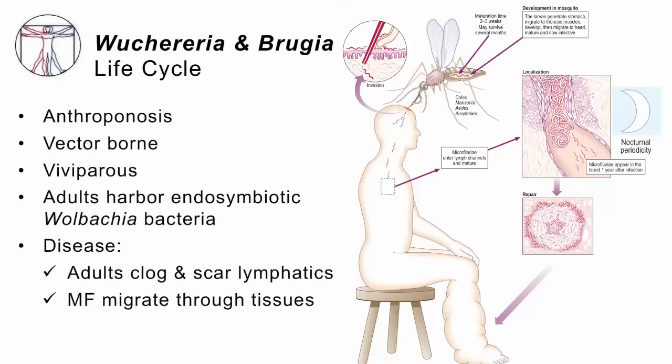This is an anthroponosis — an infection of humans — vector-borne by mosquitoes. In your lymphatic channels, they give birth to live babies; that's called viviparous reproduction. Those adults carry with them the same Wolbachia they acquired as babies in the guts of the mosquito. The disease happens when the adults clog and scar up your lymphatics, and when the microfilariae migrate through your tissues, they may also cause disease.